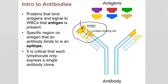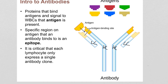Structure-wise, our antibody is actually made of four separate proteins. Two of them are light chains — light just because they're small — and two of them are heavy chains just because they're large. Everything that you see down here in blue, we call that the constant region.